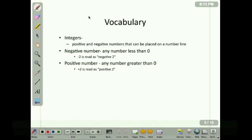Some vocabulary terms that you'll need to know. Integers include positive and negative numbers. They can be placed on a number line. These numbers include fractions or decimals. A negative number is any number that's less than 0, and a positive number is any number that's greater than 0.